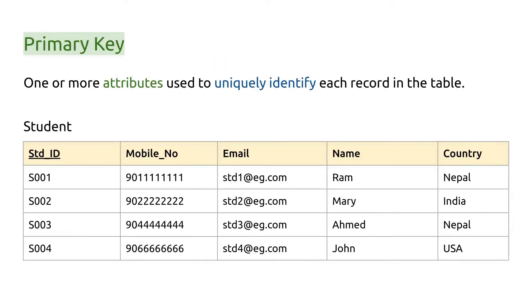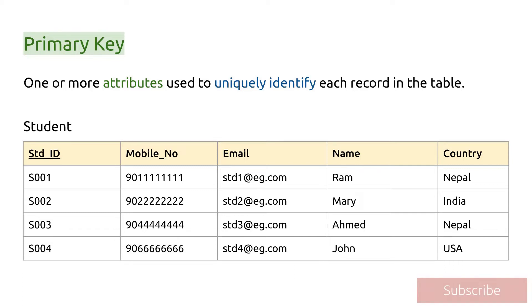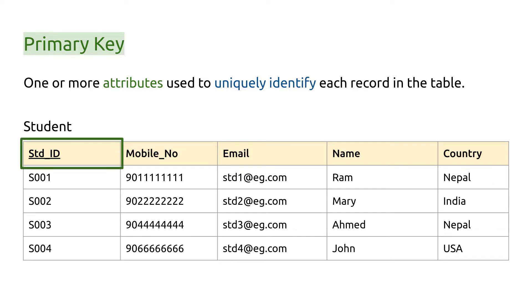Instead of super key, I will start with the primary key. I'm assuming that you already understand primary key, but if not, basically it's one or more attributes that are used to uniquely identify a record in the table. In this table, std_id — that is student ID — is the primary key.